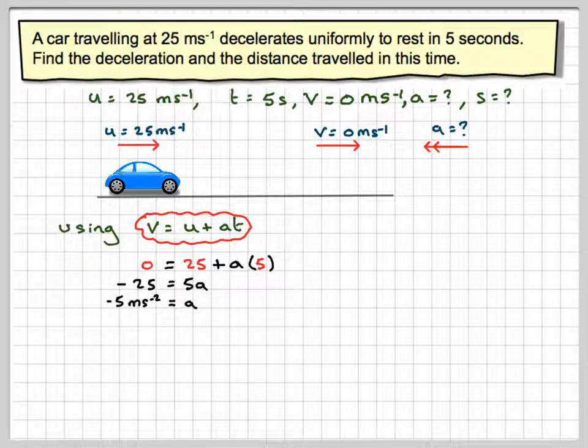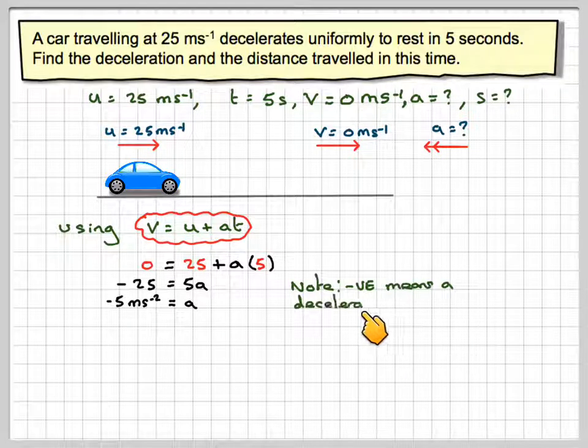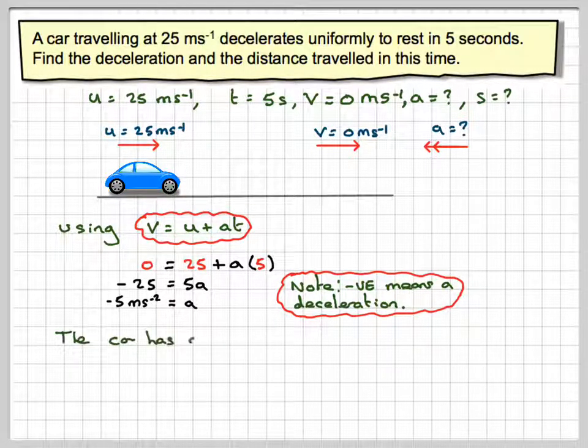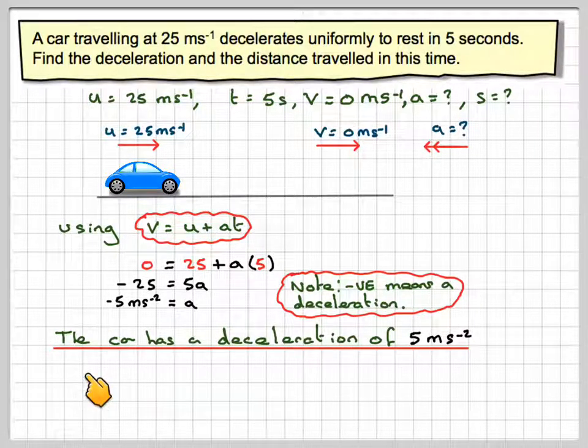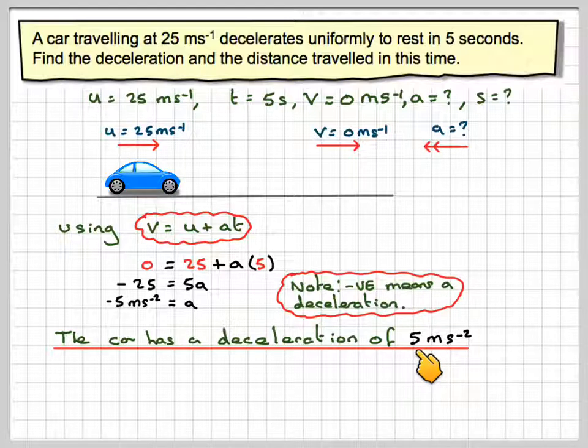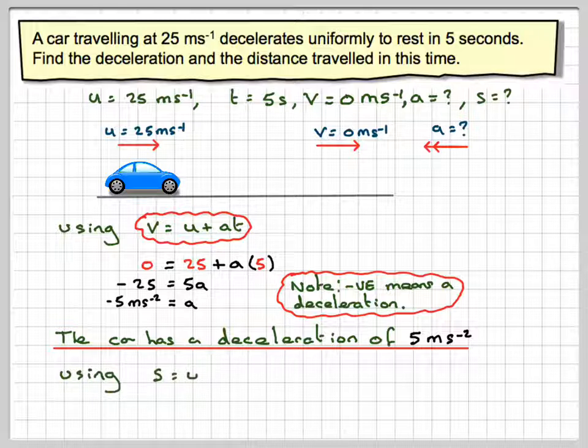Because the acceleration is acting in the opposite direction. Note that negative means deceleration in this case, because it's acting against the car. The car has a deceleration of 5 metres per second squared.